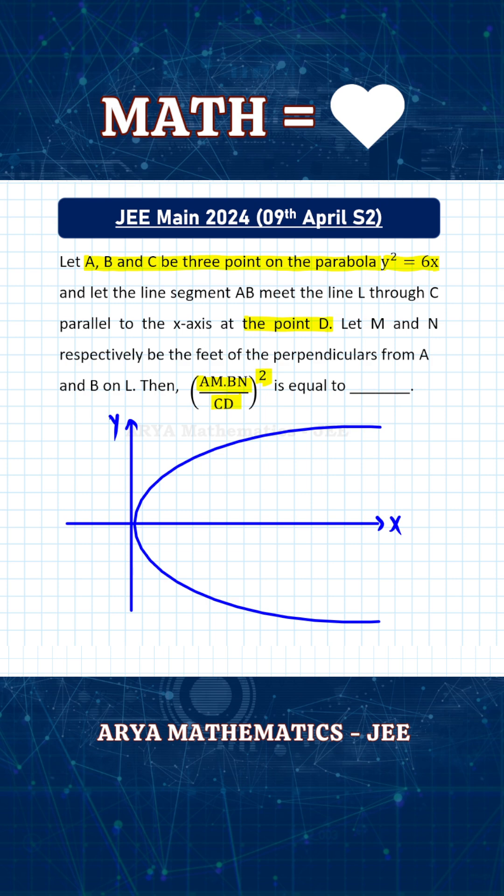Generally when we solve these types of problems, we try to take points in parametric form, and a point on this parabola will be of the form (at², 2at). But if you take points in parametric form, this problem will need some serious calculation. So instead of taking any general point, I will explain another interesting method of solving this problem.